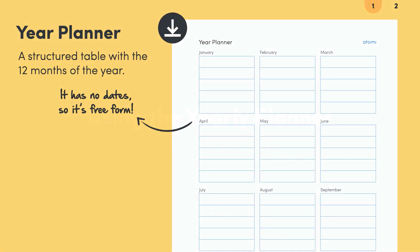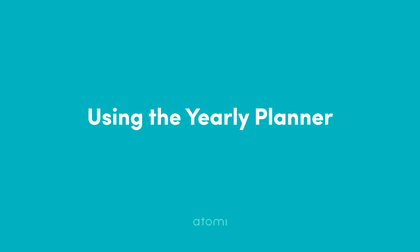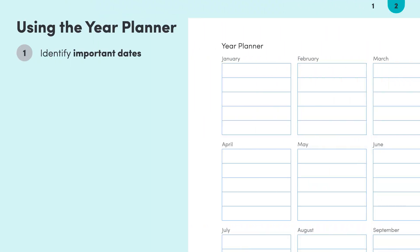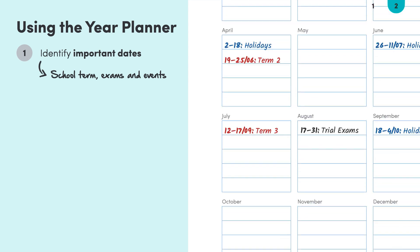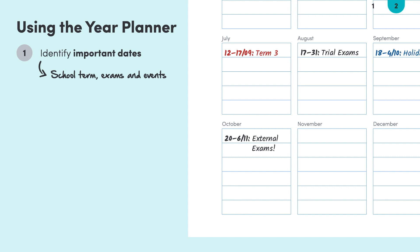So how do we go about using the planner? The first step is to identify important dates and place them on our yearly planner. A good place to start is the school calendar that's filled with important school dates at the start of the year. Another useful starting point is to take a look at your state's Board of Education website to see if they have a calendar of important dates, such as external exams. Make sure to also include public holidays and other events like school formals, talent shows or sporting events to give us a good idea of what's ahead.